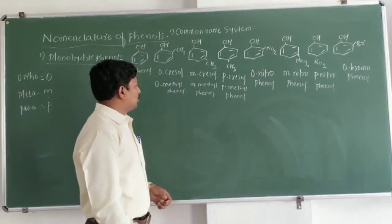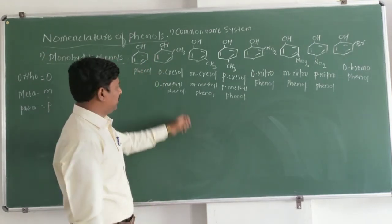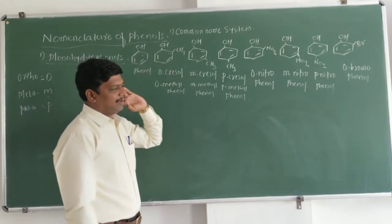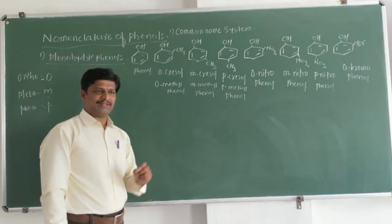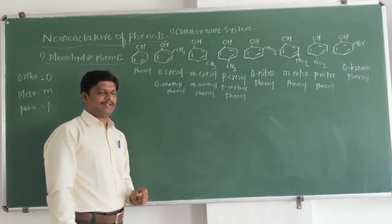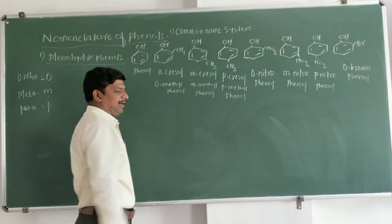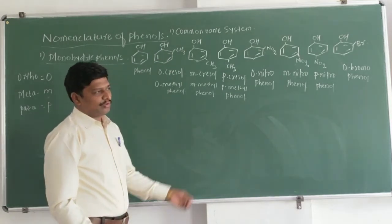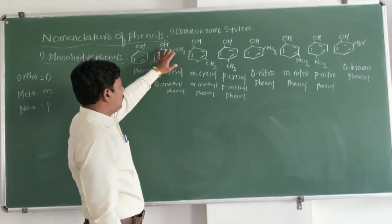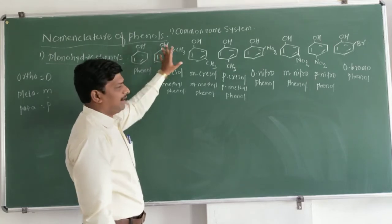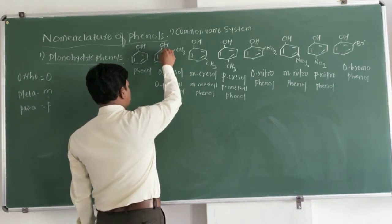Similarly, in aromatic compounds you have to give numbers to the carbon atoms of the aromatic ring. In benzene (C6H6), carbon atoms are present at every position. You have to assign numbers to these carbon atoms. Our parent compound is benzene with OH, which is phenol — so the carbon bearing the OH group is given the number 1.